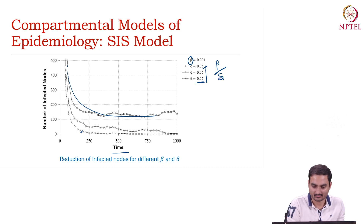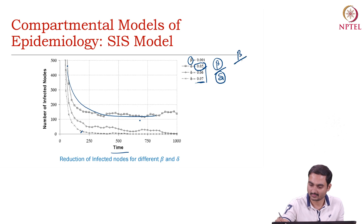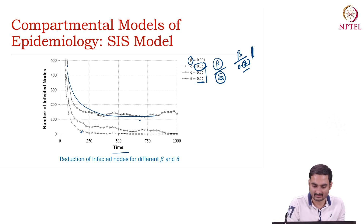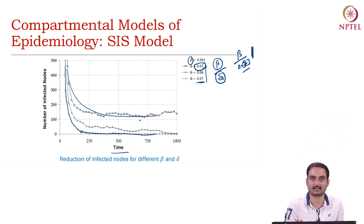When the death rate is higher (0.07), the strength beta/delta is lower, so the number of infected nodes decreases. When the death rate is lower (0.05), the strength is higher. You see that in that case the strength increases, so the number of infected nodes decreases more slowly. This is a simulated result.